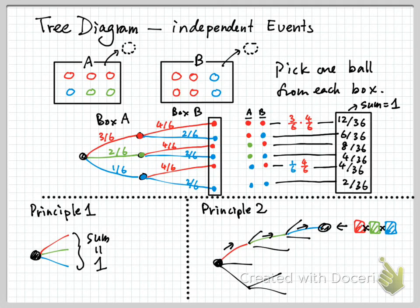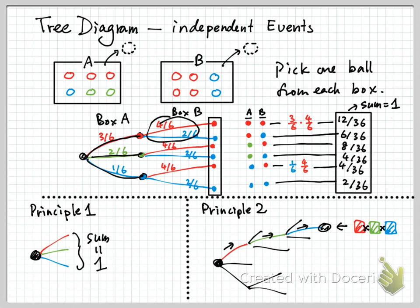Previously, we have been talking about three diagrams with independent events. During the videos, I did not emphasize the idea of independent events. Now, independent means that what happened in the first stage has no effect in the second stage. In other words, regardless of whether the first one is red, green, or blue, the second stage is always like this. If you look at these three second stages, they are the same — always 4 out of 6 for the red, 2 out of 6 for the blue.